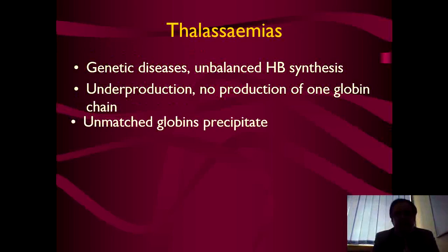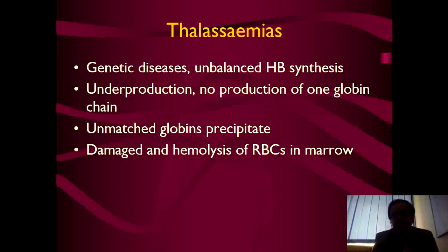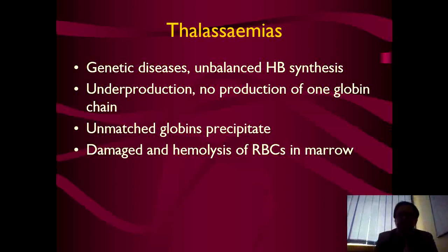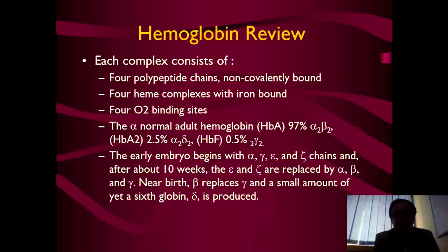Thalassemias are very commonly found in our country. The causes are genetic — there is unbalanced hemoglobin synthesis; thalassemias are basically hemoglobin defects. Under-production or no production of one globin chain means the unmatched globin precipitates in cells and causes lysis — hemolysis. The cells are damaged with hemolysis of RBCs in the marrow. It is common in the Mediterranean region and the Far East.